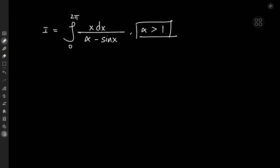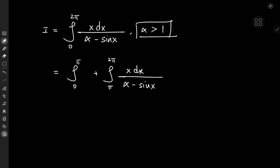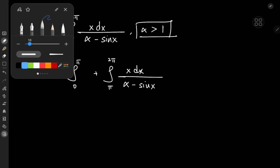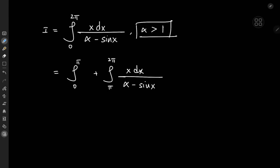How exactly do we begin? A nice way to start would be to break down the integral from 0 to 2π into an integral from 0 to π, plus an integral from π to 2π of x dx divided by (α minus sin x). We can work with the second integral, because I'd rather work with limits being 0 and π.